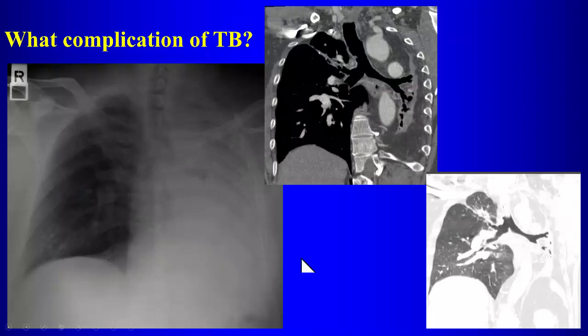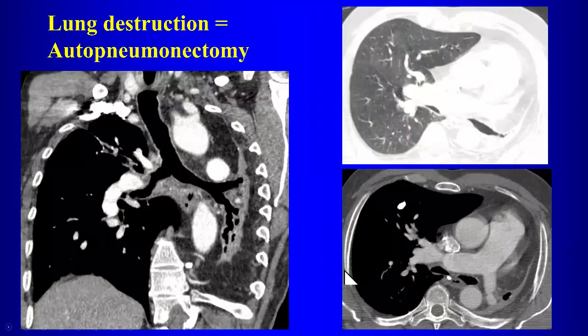Thoracic complications of TB: from extensive scarring, patients can develop large cystic spaces. When the lung is completely fibrosed down and destroyed and non-functional — completely scarred down, with extra-pleural fat filling the space — this is called auto-pneumonectomy: complete lung destruction from TB.